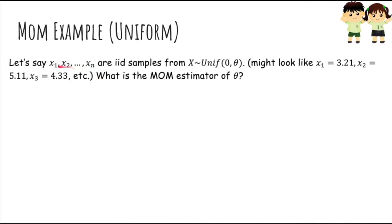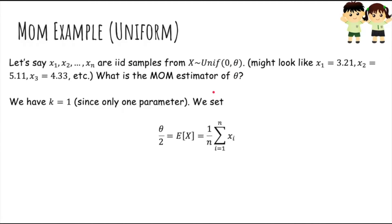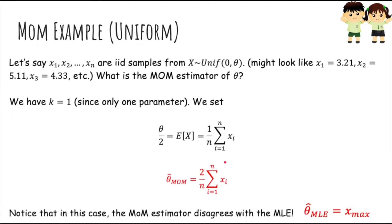Let's do some examples. If x1 through xn are samples from a uniform distribution from 0 to theta, what is the method of moments estimator for theta? We only have one parameter, theta, so we only need one equation: set the first true moment equal to the first sample moment. The first true moment is the expected value of this uniform, which is theta over 2, and the sample moment is just the sample mean. Solving for theta, we get 2 over n times the sum of the xi's as our estimator. Notice that the method of moments estimator is not the same as the maximum likelihood estimator here.